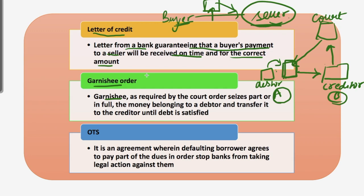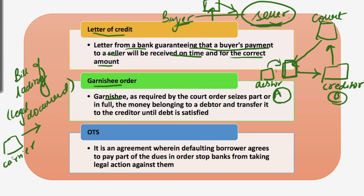Then we have bill of lading. Bill of lading is a legal document issued by the carrier to a shipper that details the type, quantity and destination of the goods being carried. Then we have OTS, or one-time settlement. It is an agreement wherein the defaulting borrower agrees to pay part of the dues in order to stop banks from taking legal action against them.